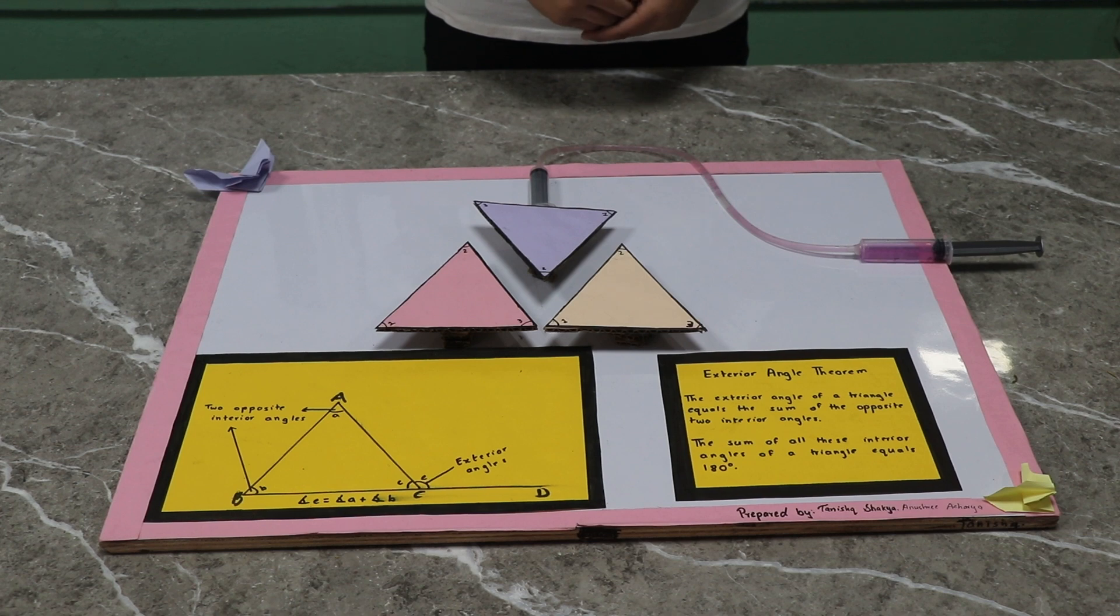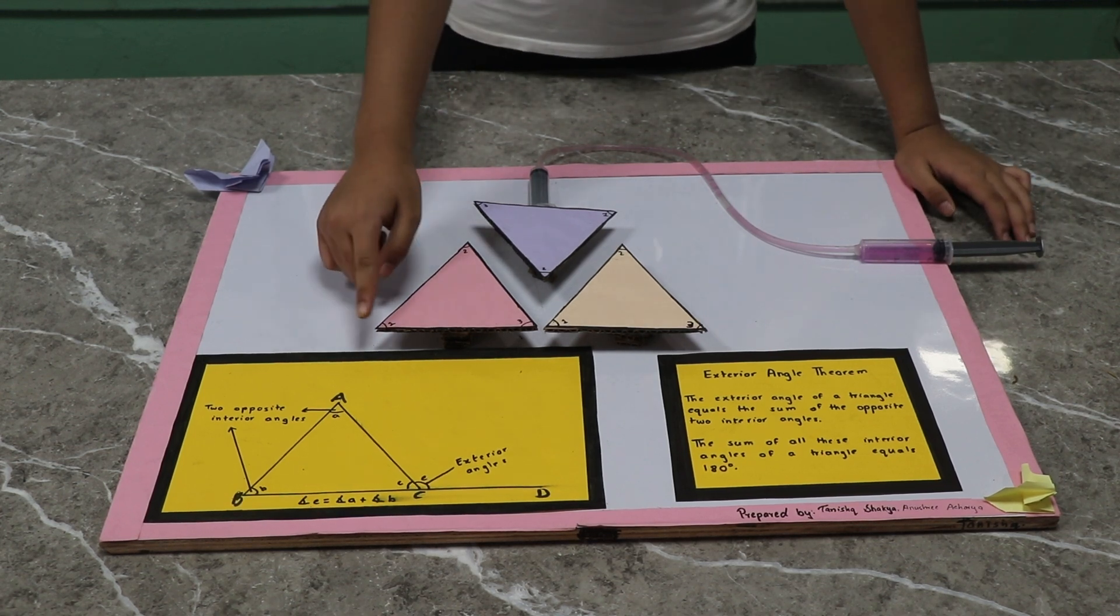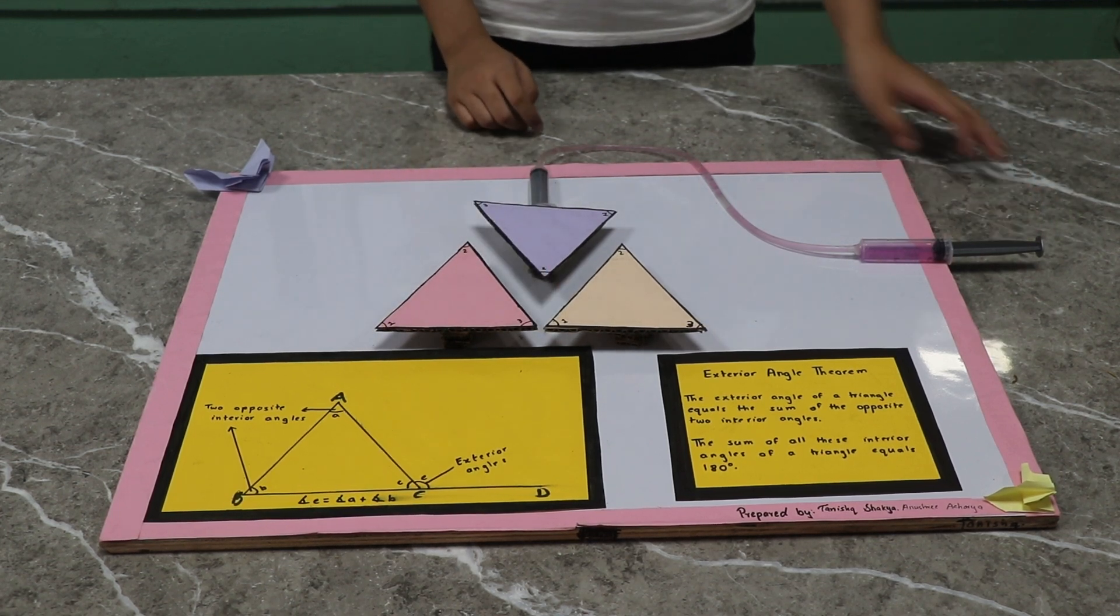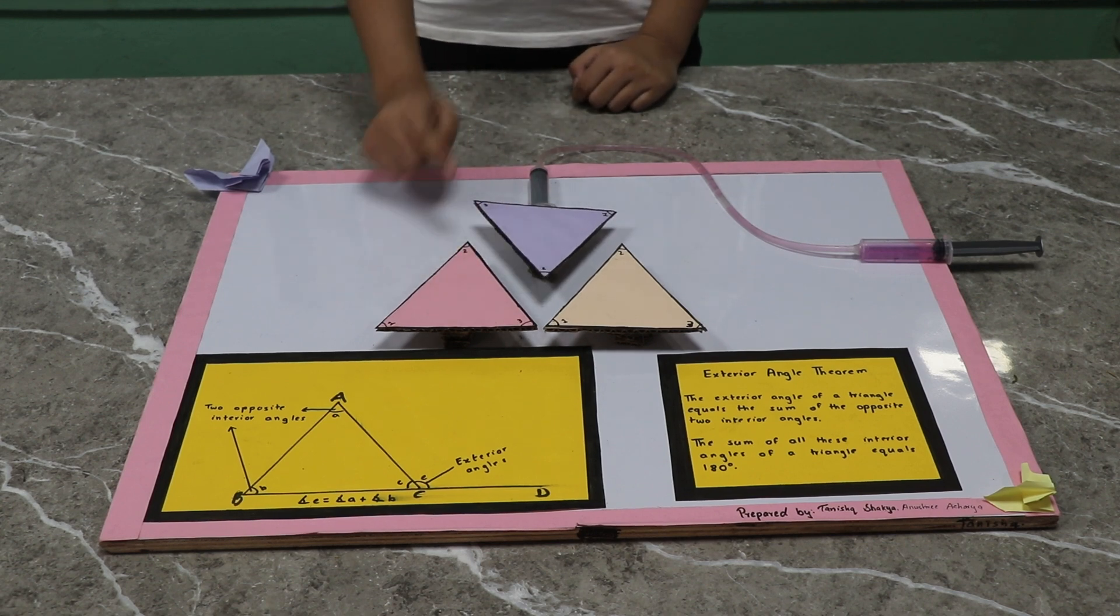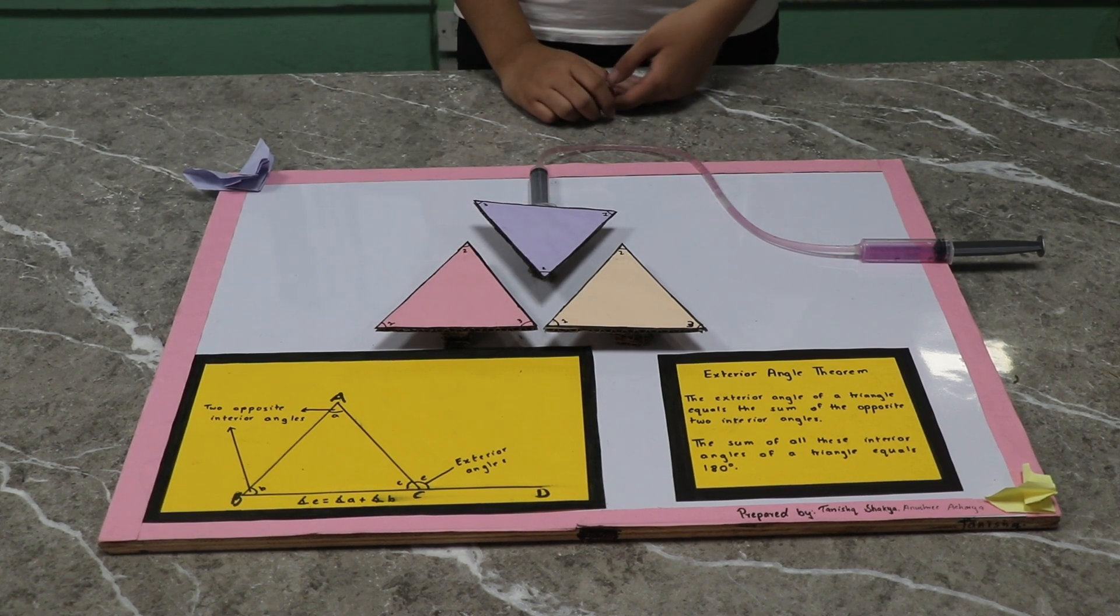So we've taken three congruent triangles where angle 1 and angle 1 are always equal since they're corresponding angles, and angle 2 and angle 2 are also equal since they're alternate angles.